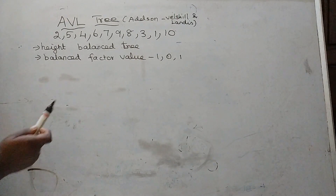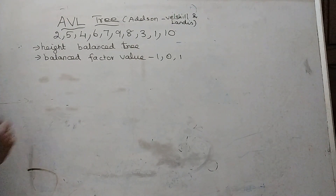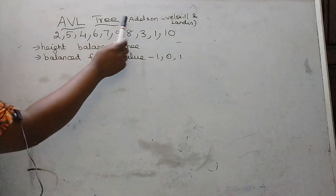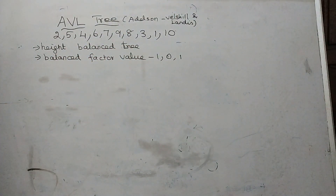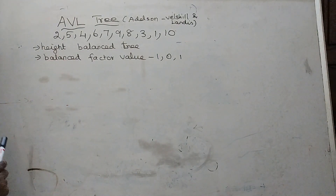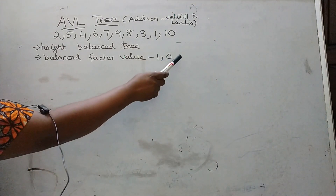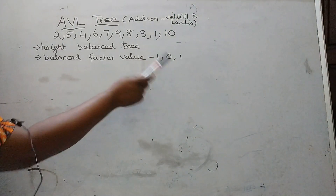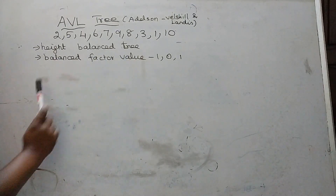In this tutorial we are going to learn about AVL tree. This tree is also called as Adelson-Velsky and Landis tree. This AVL tree is a binary search tree with balance condition values of minus 1, 0, and 1. These three values are also called as balance factor values.